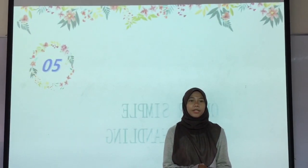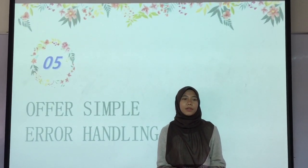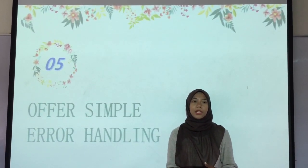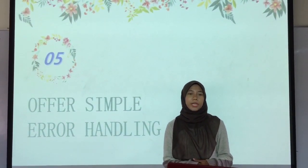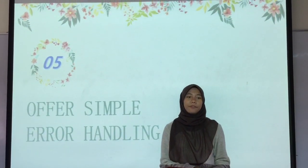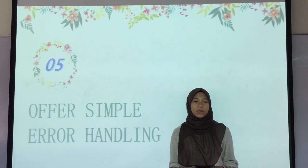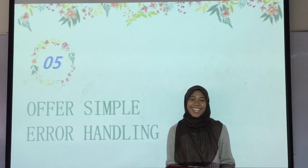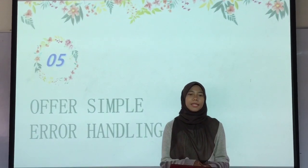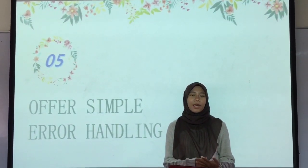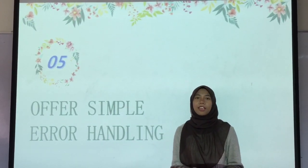Rule No. 5: Offer simple error handling. The system should automatically recover or allow the user to easily recover if an error is made. Systems should be designed to be as foolproof as possible, but when errors unavoidably occur, ensure users are provided with simple, intuitive, step-by-step instructions to solve the problem as quickly and painlessly as possible. For example, flag a text field when the user forgot to provide input in an online form.